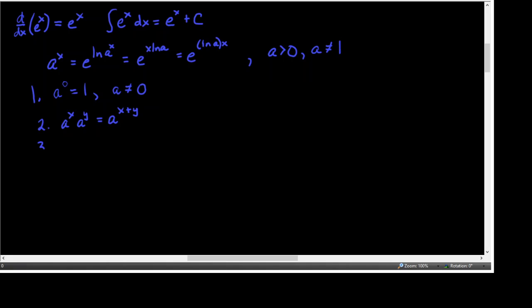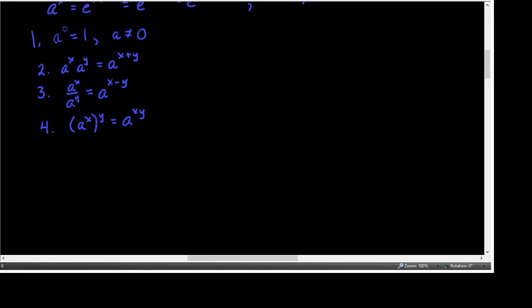0 to the 0 is an indeterminate form, so it has no particular value that we can specify. Second, when you have the same base and you're multiplying two powers with that same base, you keep the base and add the exponents. Number 3, when you're dividing powers that have the same base, the answer will keep the base and subtract the exponents. And the last one: when you have a power that is then raised to a power, you multiply the exponents.